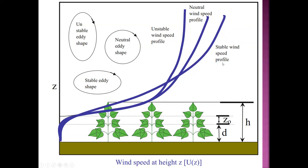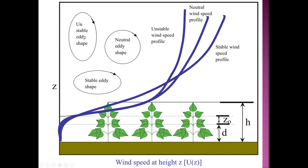Drawing on fluid mechanics: with laminar pipe flow you have a strong velocity gradient across the cross-section, while turbulent flow produces a much more uniform velocity profile. Similarly, in an unstable atmosphere, vertical eddies transfer momentum both upward and downward, creating a more uniform wind speed profile analogous to turbulent pipe flow. A stable atmosphere is analogous to laminar flow with a strong speed gradient.